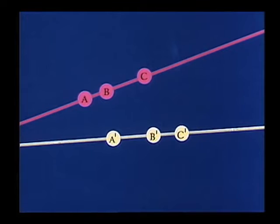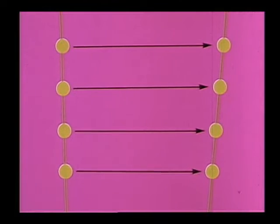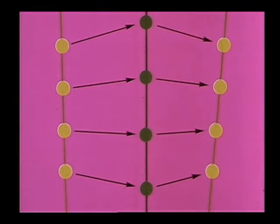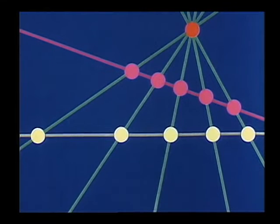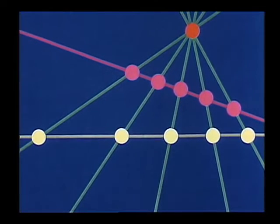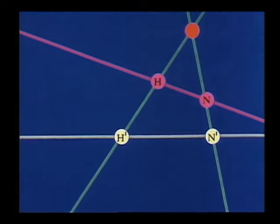But do different products actually define different mappings? A mapping consists essentially of ordered pairs of points and their respective images. Different products represent the same mapping if they yield the same set of ordered pairs. In the case of perspectivities, the product consists of only one factor. The mapping in general is completely determined by only two of its ordered pairs.